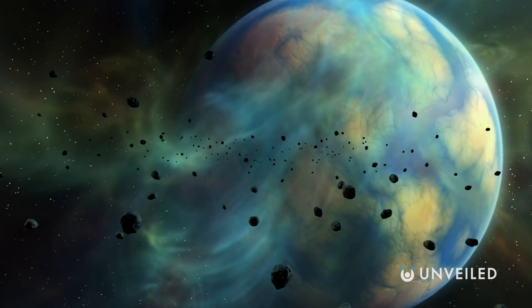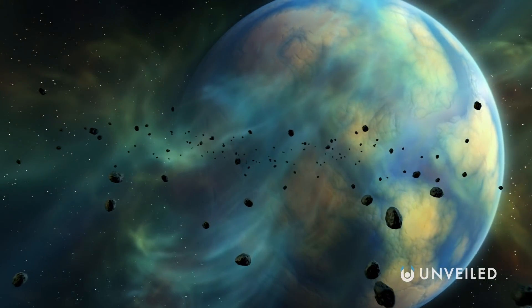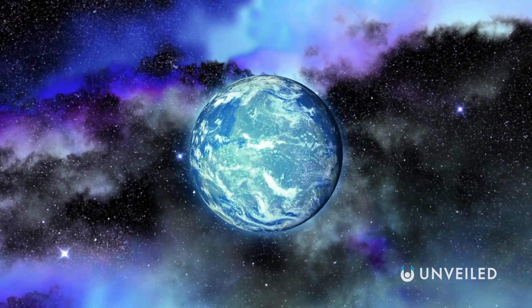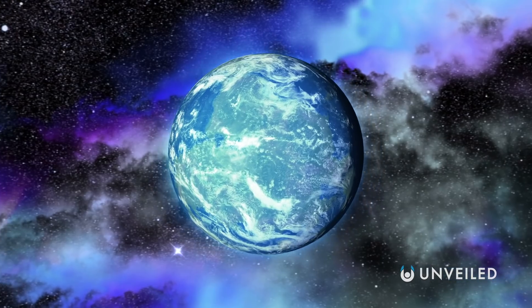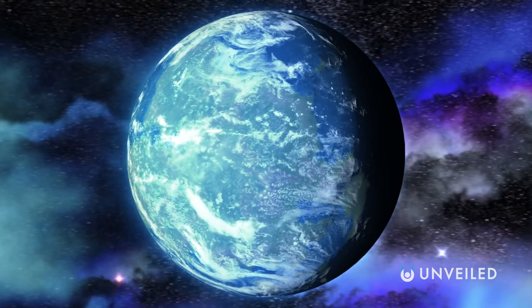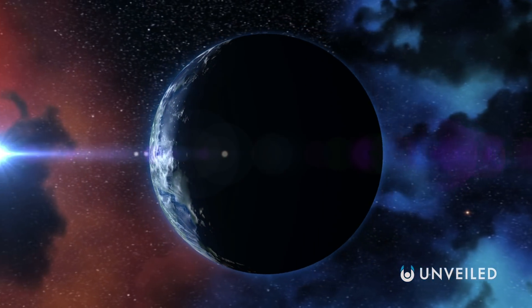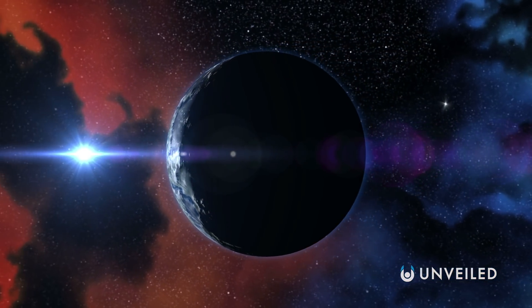Of course, not all of those will be Earth-like. But according to a June 2020 paper by a team at the University of British Columbia, we can estimate that one in five sun-like stars does have an Earth-like planet in its habitable zone, which amounts to around six billion celestial masses within the Milky Way that are something similar to our pale blue dot.